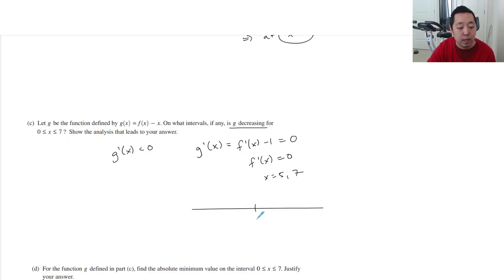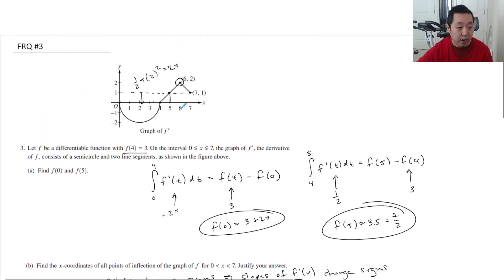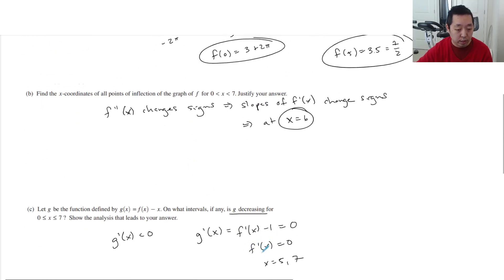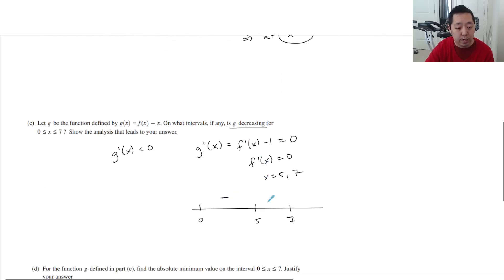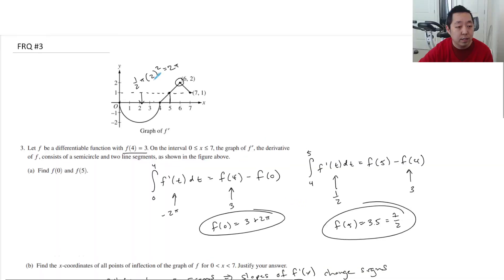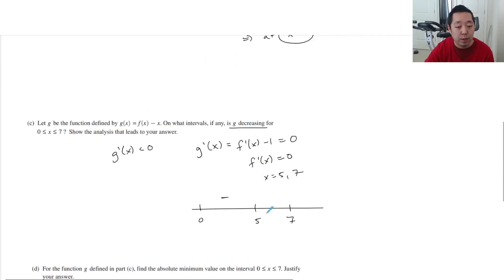So that happens at 5 and 7. So then I make a number line. Here's 5, here's 7. I actually don't want to go beyond 0. So then I say between 0 and 5, this quantity f prime of x is below 1. So when I do the subtraction, it's going to be negative. Between 5 and 7, it's above 1. So when I subtract 1, it would be positive. Beyond 7 to the right, it's going to be negative.